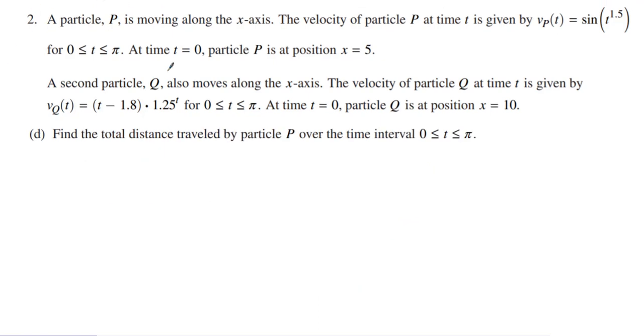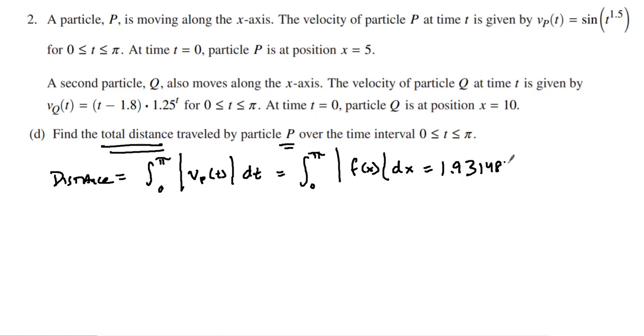And now last but not least, we want to find the total distance, the total distance of particle P. And so when we find distance, we want to take the integral from 0 to pi of the absolute value of V of P with respect to time, or 0 to pi of the integral of f of x dx because that particle P was my f. And so I end up getting 1.931483. There's no sign on this because this is just distance. It's a scalar quantity. We don't care about direction in terms of distance.